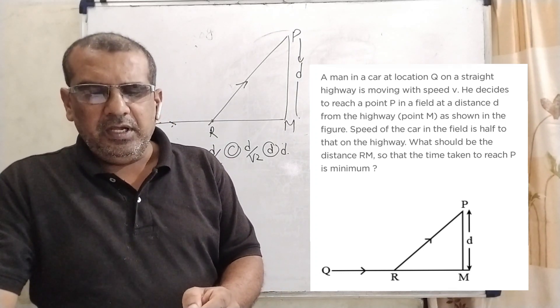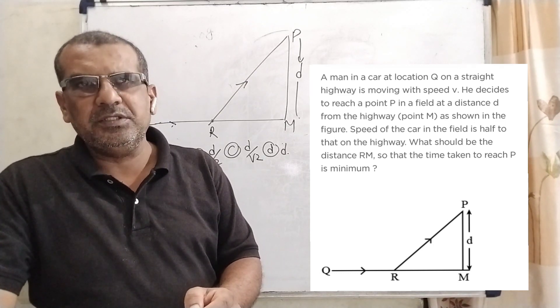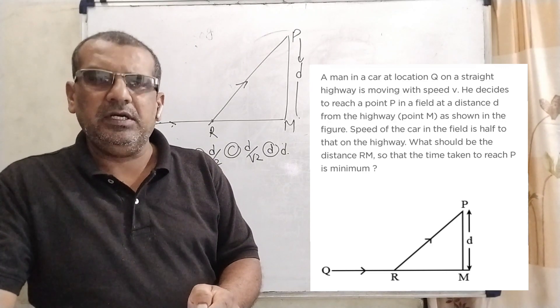Here we have given four options. Option A: D by root 3, option B: D by 2, option C: D by root 2, and option D: D.